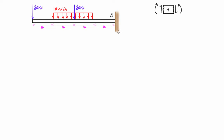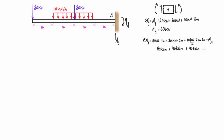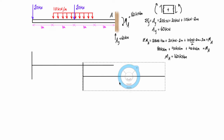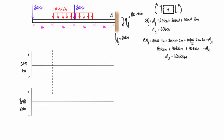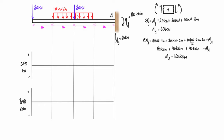There's no reason to panic because it's basically the same analysis as the last video where the support was on the other end. To start, we need to figure out the reactions here, so this is going to be Ay, and we're also going to have a moment Ma. It turns out that Ay is 60 kilonewtons and Ma is 160 kilonewton-meters. Now let's set up our shear force and bending moment diagrams with grid lines at every point of interest — the start, stop, or change of a distributed load or a point load.